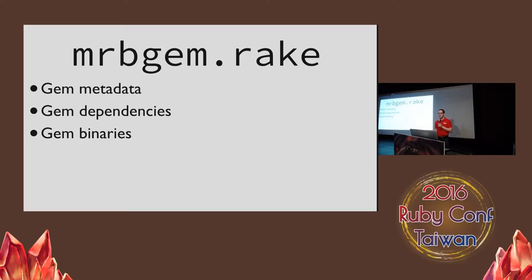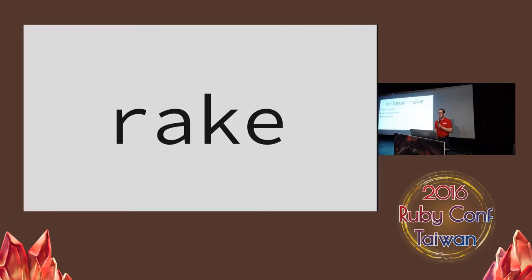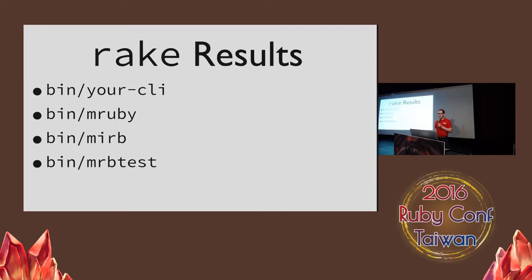Like a RubyGems gem specification, it contains the gem metadata, the dependencies, and the list of binaries. Metadata includes the name, the version, the license, the test files, and so on. You also specify any gems you depend on and which binaries the gem will create. After you have these files configured, you run rake to build mruby and all the executables you specified. When rake is complete, you'll see several executables in the bin directory. When using mruby CLI, you'll see the name you specified in the mruby gem specification, along with mruby and mruby with all gem dependencies compiled in. You can use these to test out small changes if you don't want to run a full test.